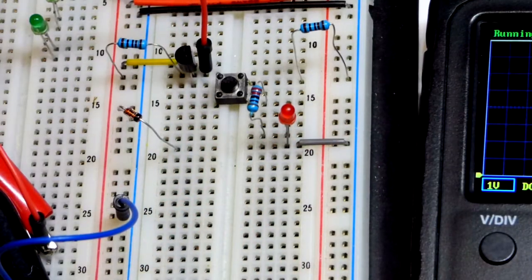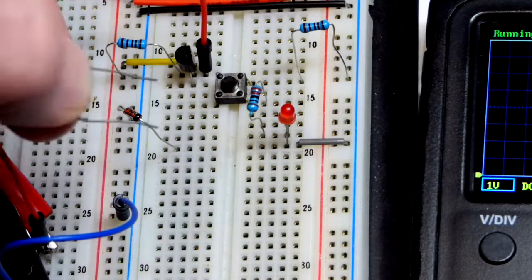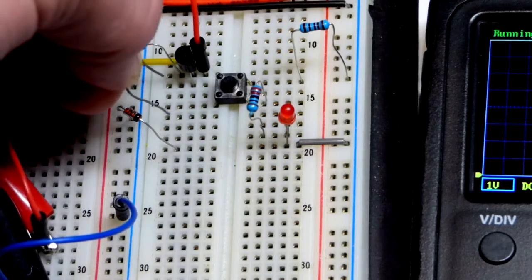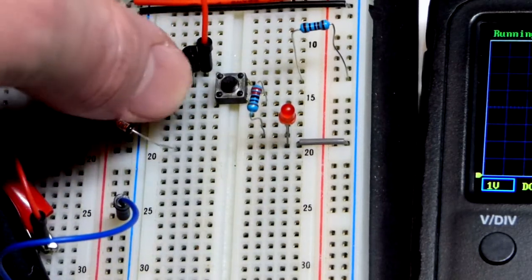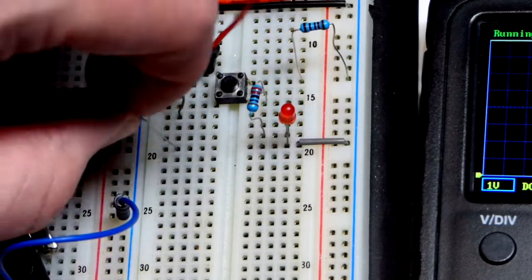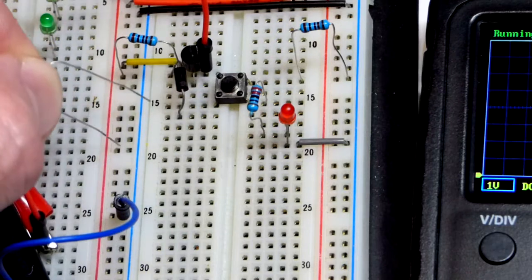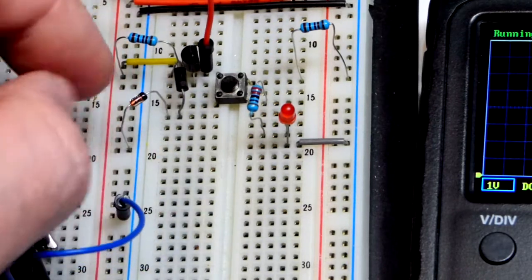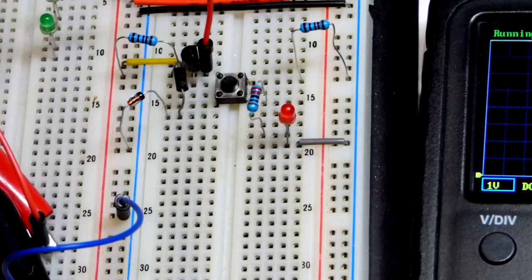This one we need to forward bias it, so anode towards the more positive side which is the base of the transistor, the middle pin since this is the 2N2222. The gray stripe is down there, camera might not pick it up too well. Now we'll put that in series with the Zener diode.